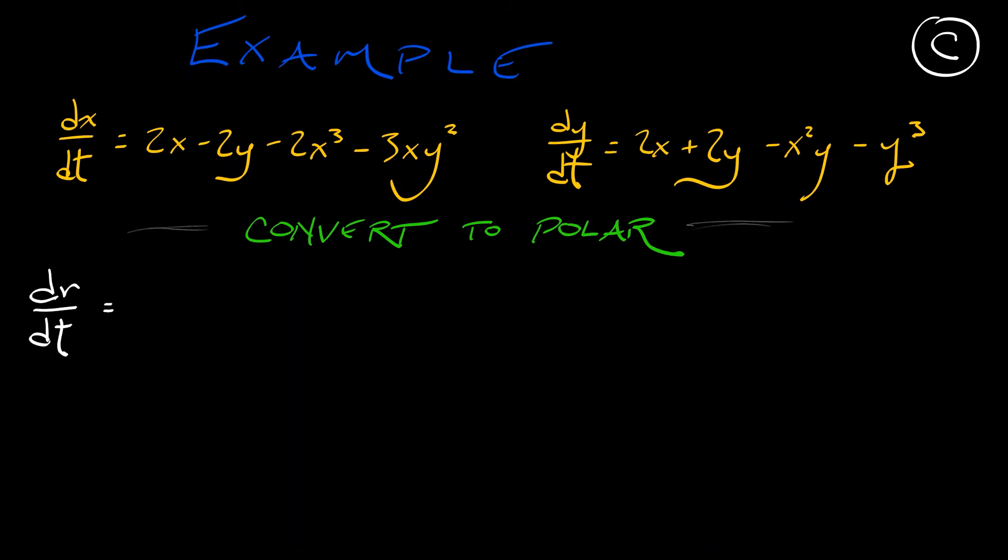That gives us dr/dt is 1 over r times quantity x·dx/dt plus y·dy/dt. When I substitute in dx/dt and dy/dt as per the dynamical system as given above...